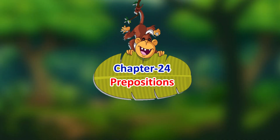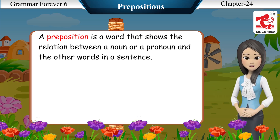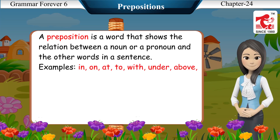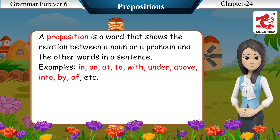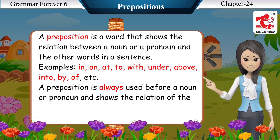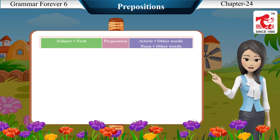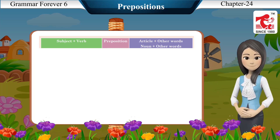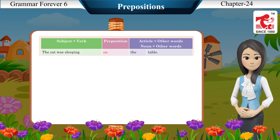Chapter 24: Prepositions. A preposition is a word that shows the relation between a noun or a pronoun and the other words in a sentence. Examples: in, on, at, to, with, under, above, into, by, of, etc. A preposition is always used before a noun or pronoun and shows the relation of the noun or pronoun to the other words in the sentence. Structure: Subject + Verb + Preposition + Article + Noun + other words.